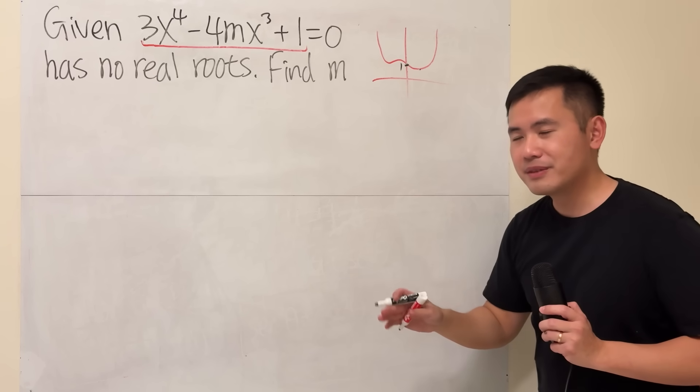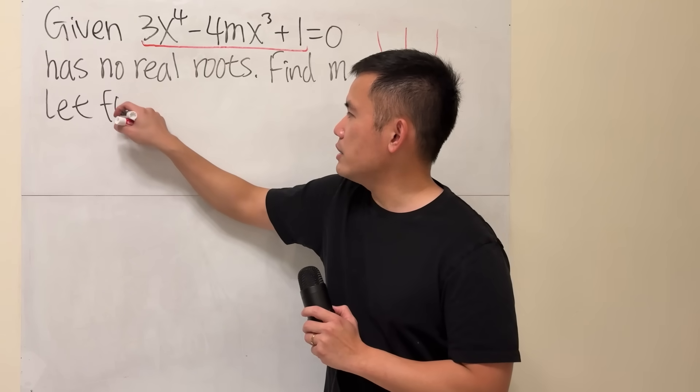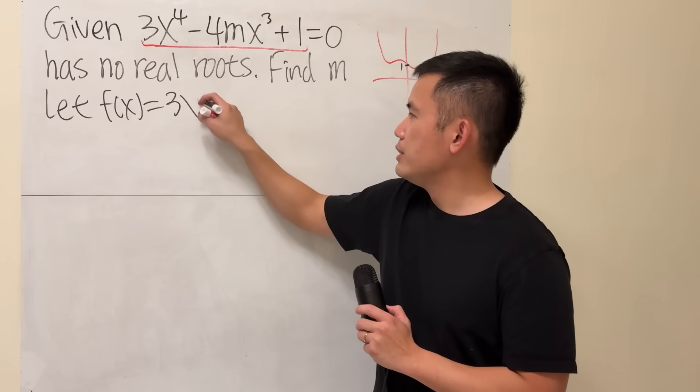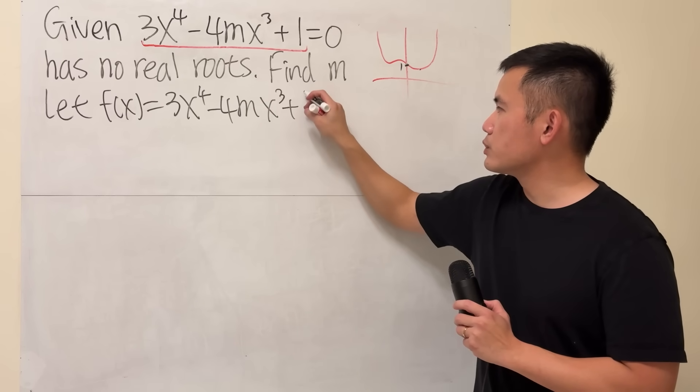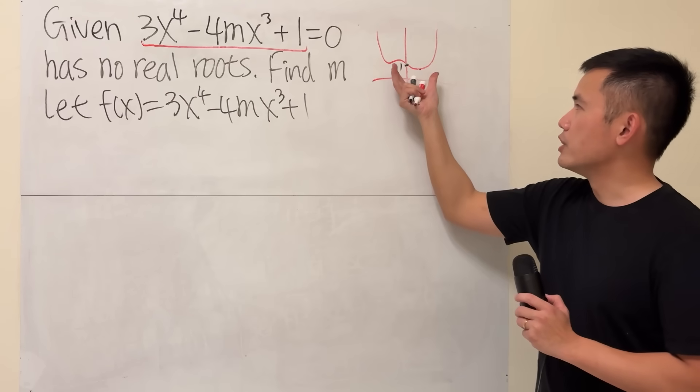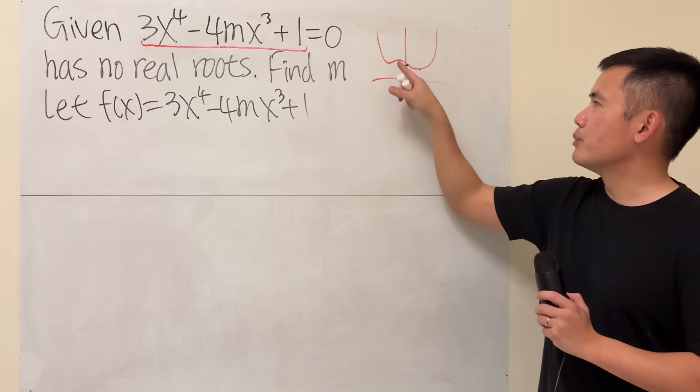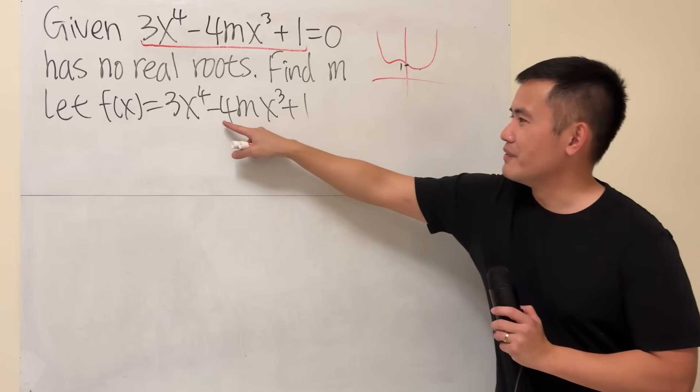Here we go. I'm going to call that to be our function f of x, which is 3x to the fourth power minus 4mx cubed plus 1. Once again, because the coefficient here is positive, in general it's going to be opening up. Maybe right here I don't know what will happen because we have this term.